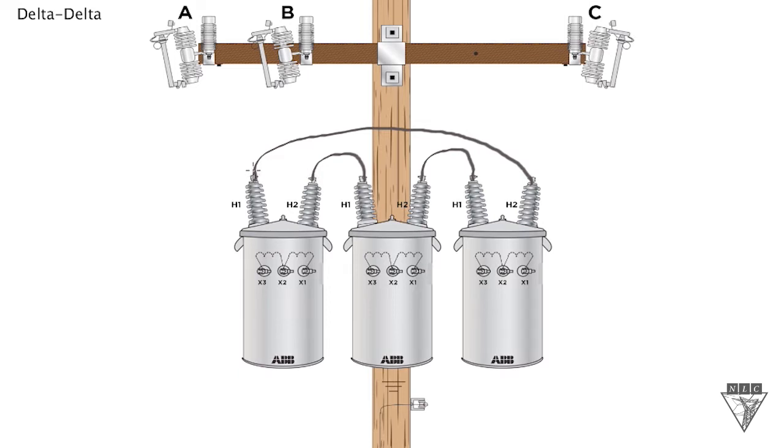Now we're just going to run them up to each phase. So we'll take this one to A phase, take this one up to B phase, and we'll take this last one up to C phase. Okay, so that's a delta primary connection.